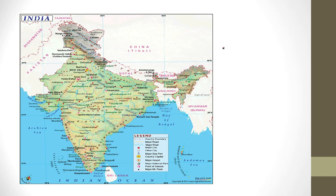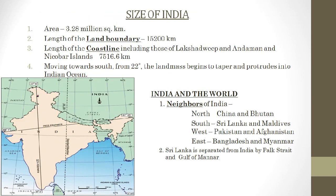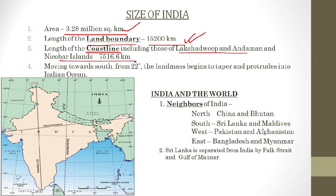This map shows Arunachal Pradesh and Gujarat for reference. Now, some important factual details about the size of India: the area of India is 3.28 million square kilometers, the length of the land boundary of India is 15,200 kilometers, and the length of the coastline, including Lakshadweep and Andaman and Nicobar Islands, is 7,516.6 kilometers.